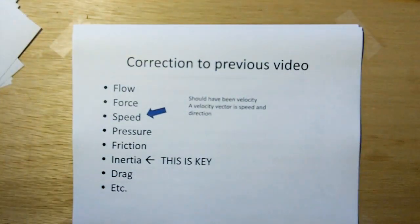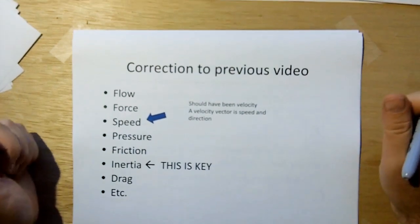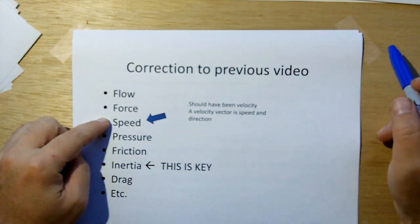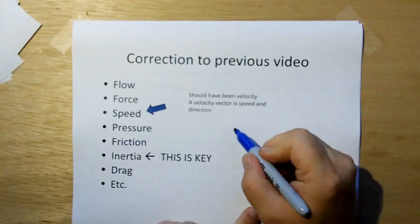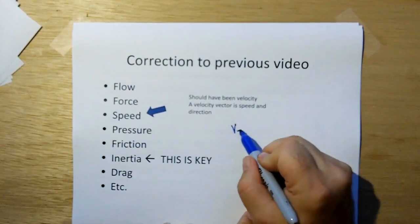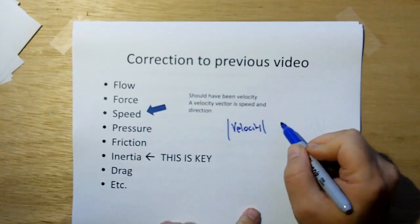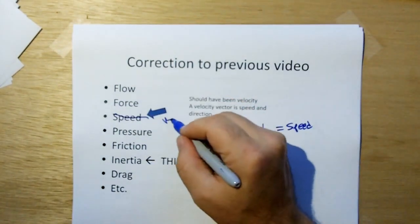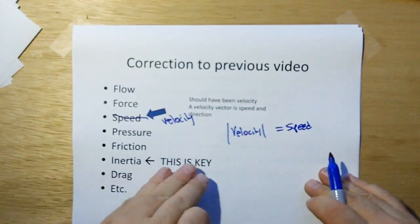I have a correction to the previous video. In the list of things representing what vectors can represent, I accidentally had speed. This should have been velocity. Speed is the magnitude of velocity — if you have velocity and take the magnitude of velocity, that equals speed. Sorry about that.